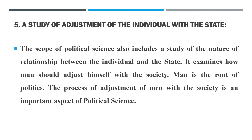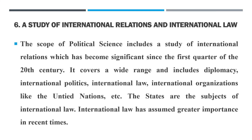Next we have the study of international relations and international law while discussing the scope of political science. Political science includes a study of international relations, which has become significant since the first quarter of the 20th century. It covers a wide range and includes diplomacy, international politics, international law, and international organizations like the United Nations. The United Nations was introduced in 1945. This field developed right after World War I, which ended in 1918, after which the League of Nations was started.